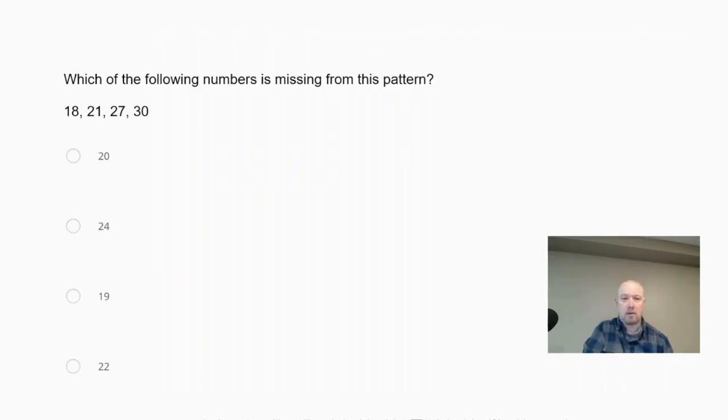So the first thing we want to investigate is, is this arithmetic? Arithmetic means we're adding by a common difference each time. So if I look here, the difference between 21 and 18 is 3, so that means we're going up by 3.